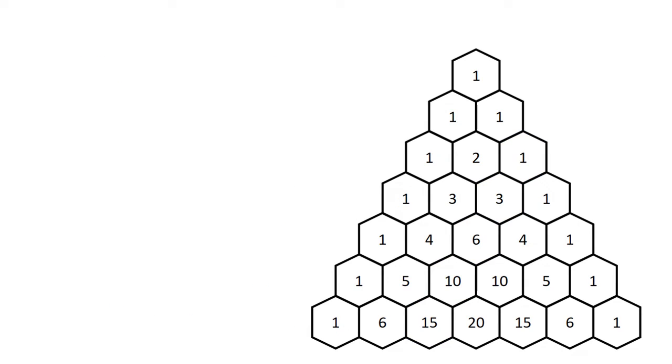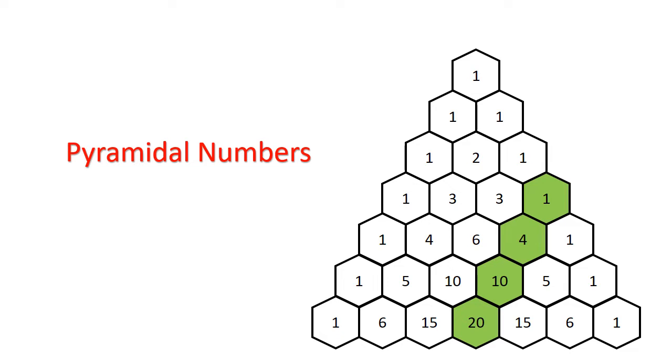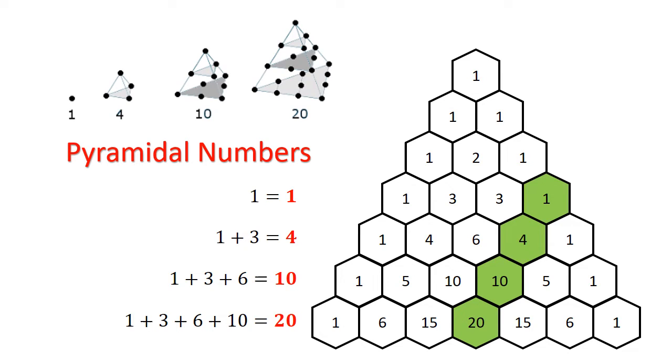If we look at the adjacent diagonal, the numbers 1, 4, 10 and 20 are pyramidal numbers. These are the sum of triangular numbers. They can be expressed visually as an increasing stack of balls in a pyramidal shape.